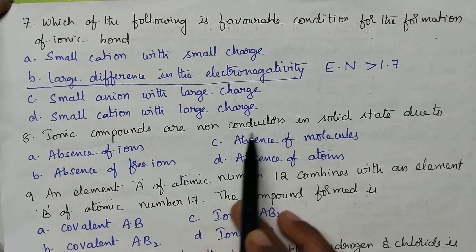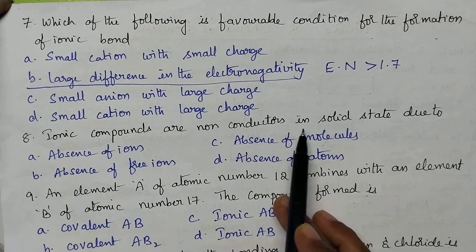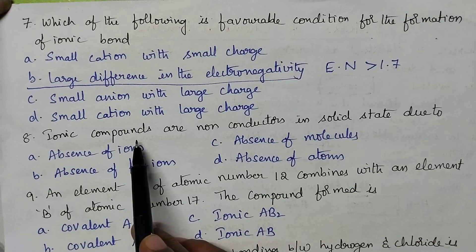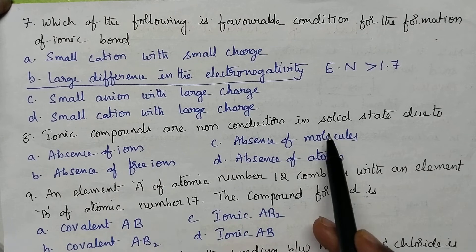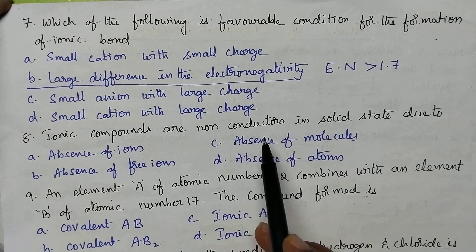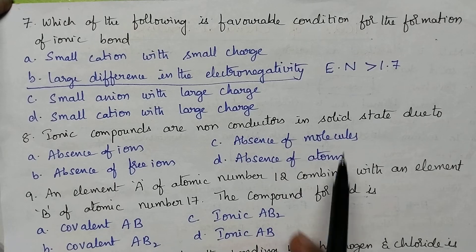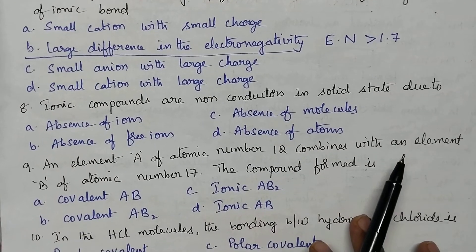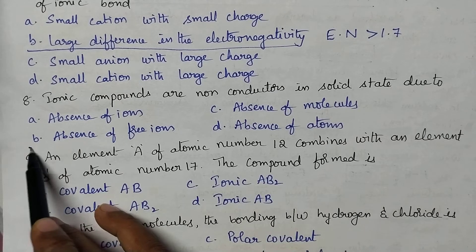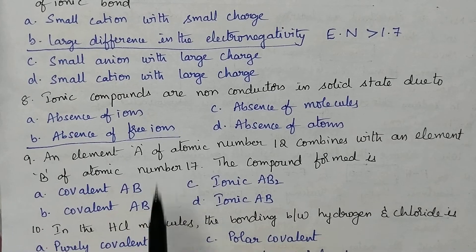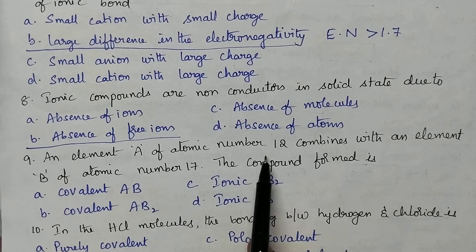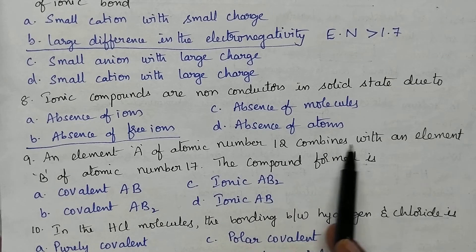Ionic compounds are non-conductors in the solid state. Generally, ionic compounds contain ions, but in the solid state the ions are not available in a free state. So ionic compounds are non-conductors in the solid state due to the absence of free ions.